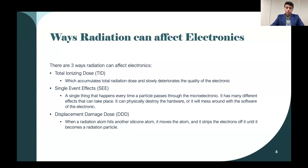Sometimes it could also destroy the hardware, or it'll just mess around with the software. The third way radiation can affect electronics is displacement damage dose, which is when a radiation particle hits a silicon atom, moves the atom, and strips off its electrons until that atom also becomes a radiation particle.